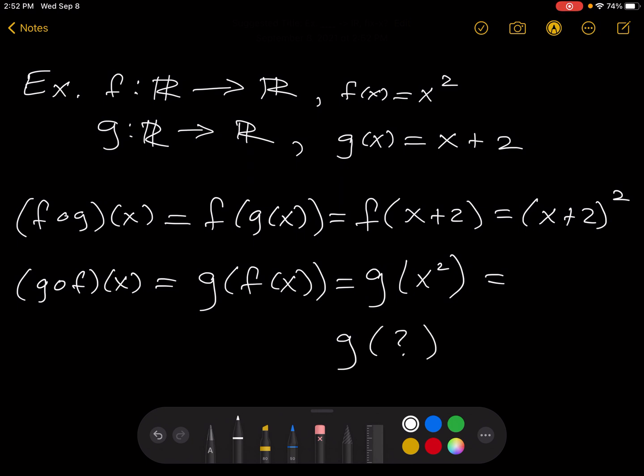g of whatever equals whatever plus 2. So now the whatever is x squared, so we have x squared plus 2. And that's it.